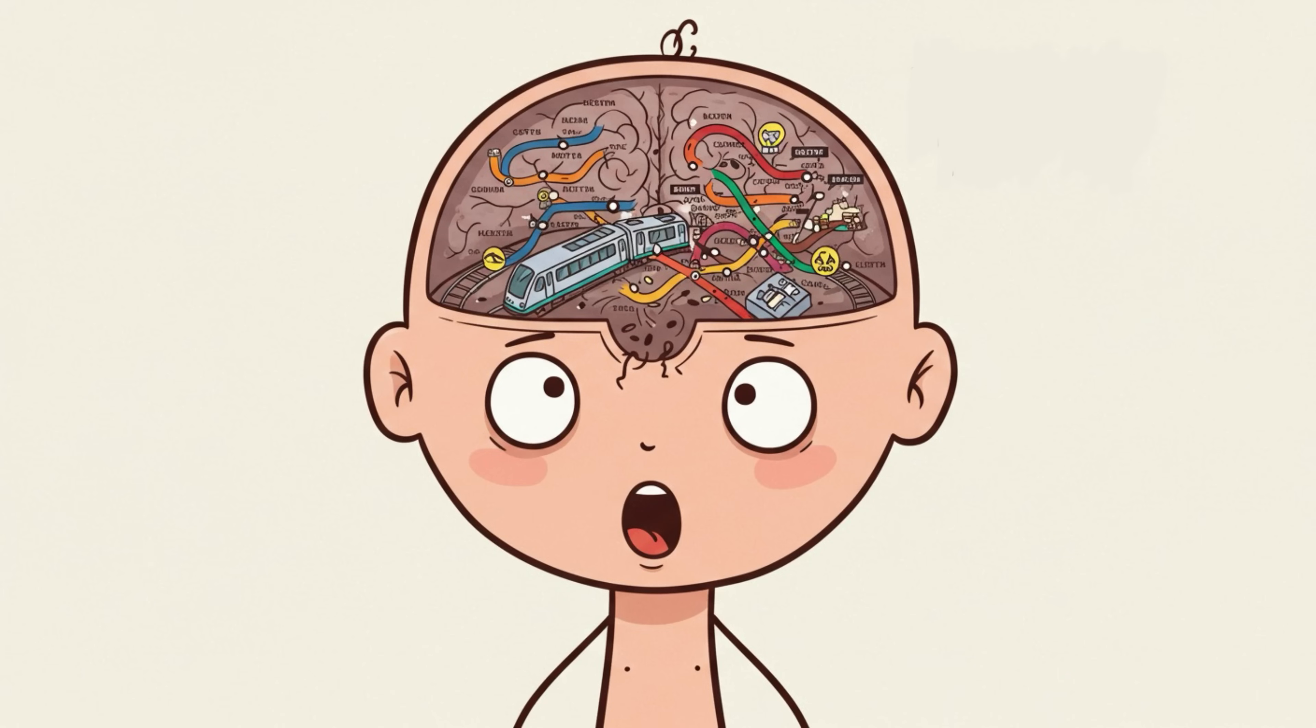At birth, your neurons are there, sure, but the wiring between them is like an unfinished subway system. Tracks half-laid, stations not connected, and the occasional train crash if you look at a ceiling fan too long.